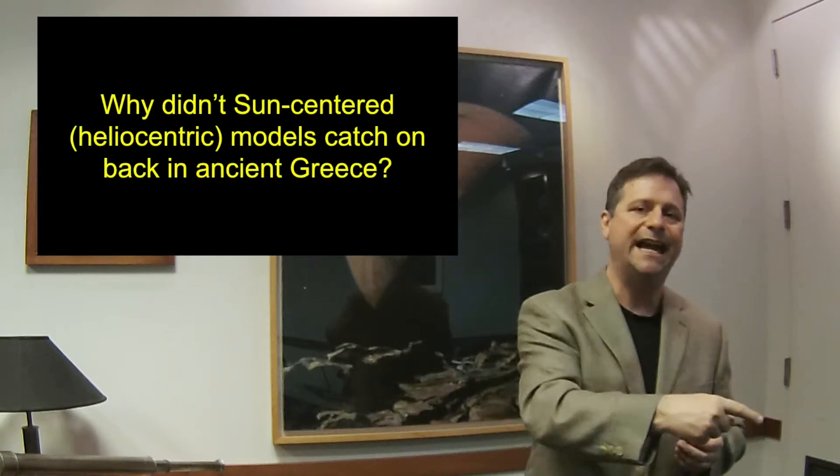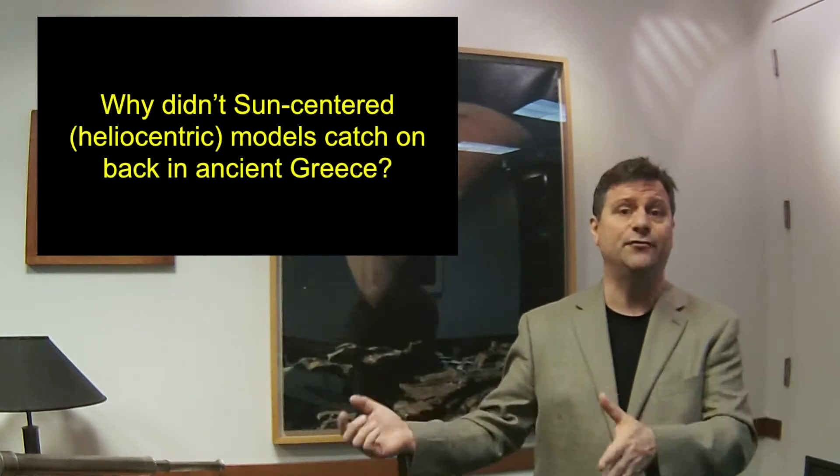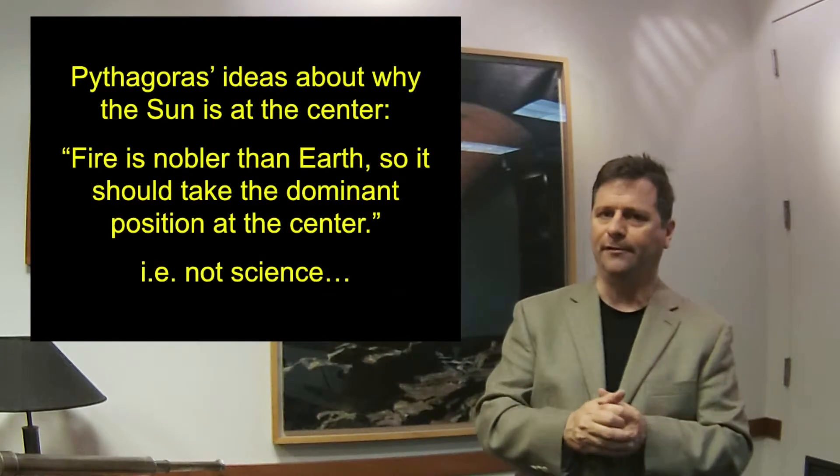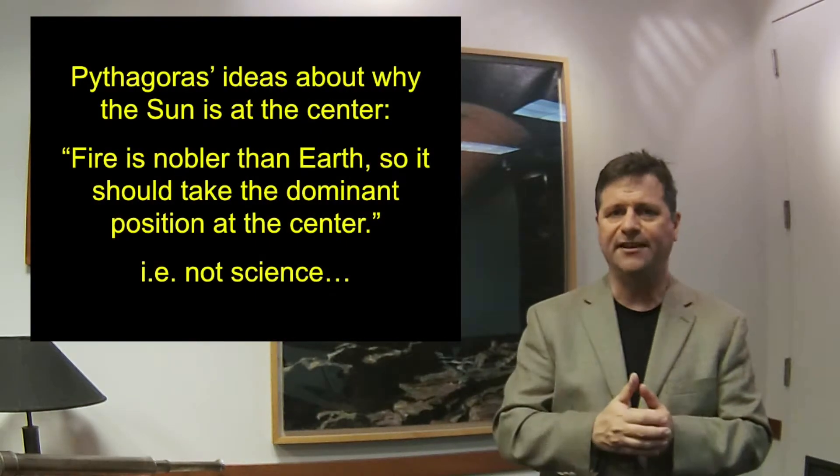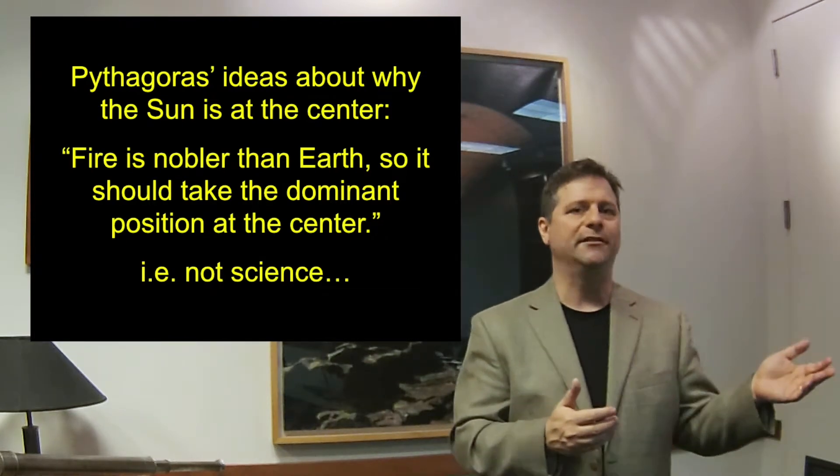So then let's actually look at some other things. Why didn't people say that the sun was at the center? Didn't we just learn from the last lecture that the sun is 20 times bigger than the moon? The sun's really big. If the sun's really big, shouldn't it be at the center? And people supported it, such as Pythagoras. He posited that the sun should be at the center. Well, why did he say that? It's because fire is nobler than earth. So therefore, fire should be at the center. Well, it's not very scientific.